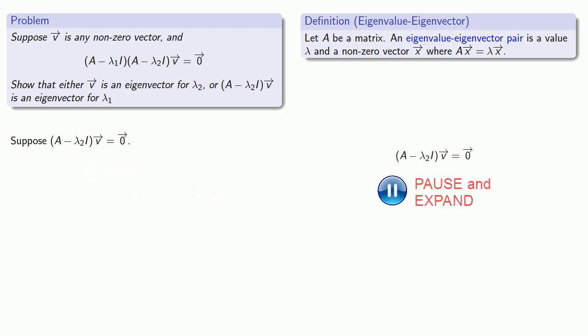We can expand that out. Now remember, I is the do-nothing transformation. So this Iv is really the same thing as v.